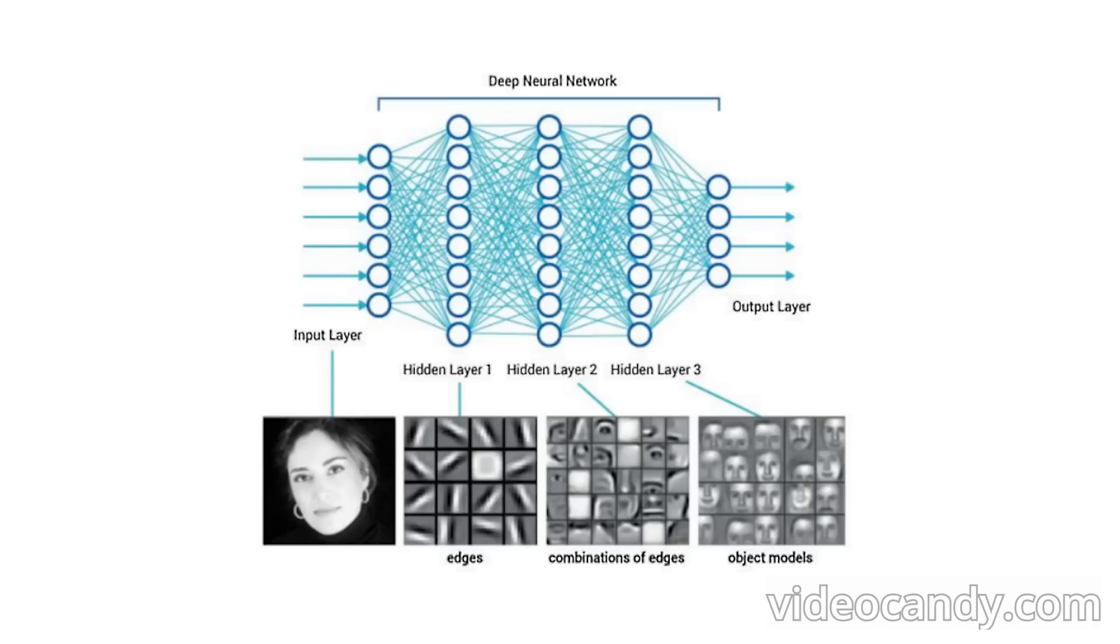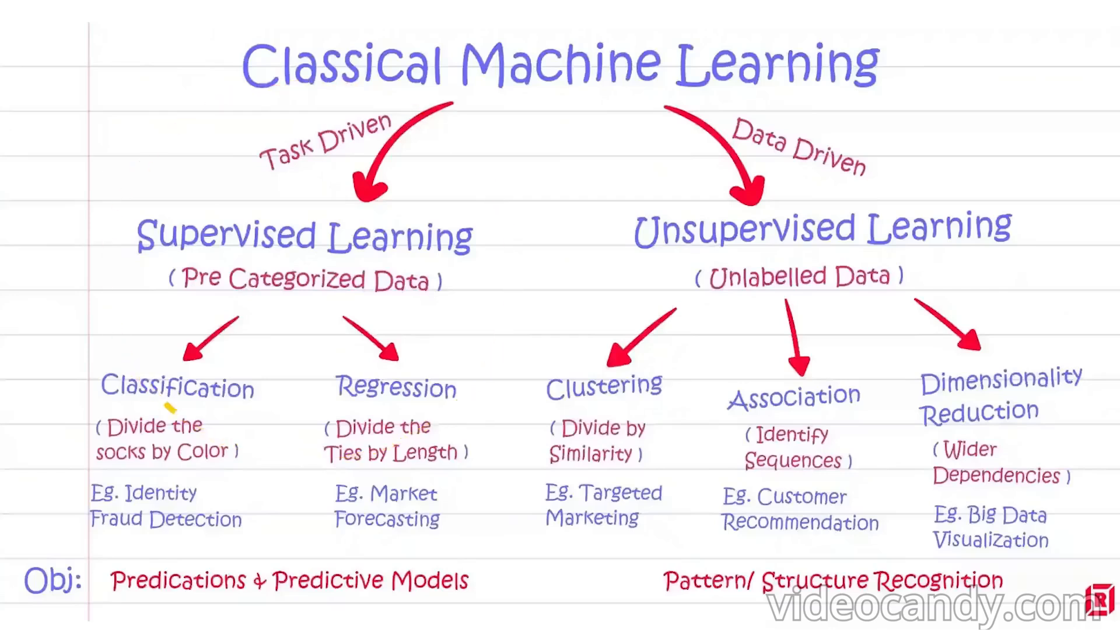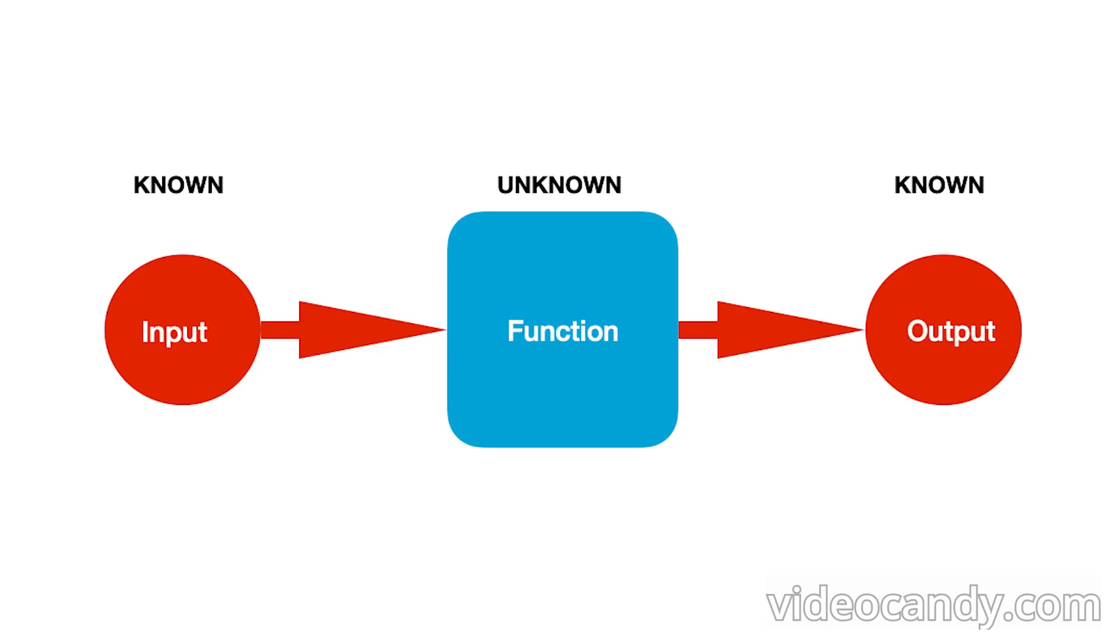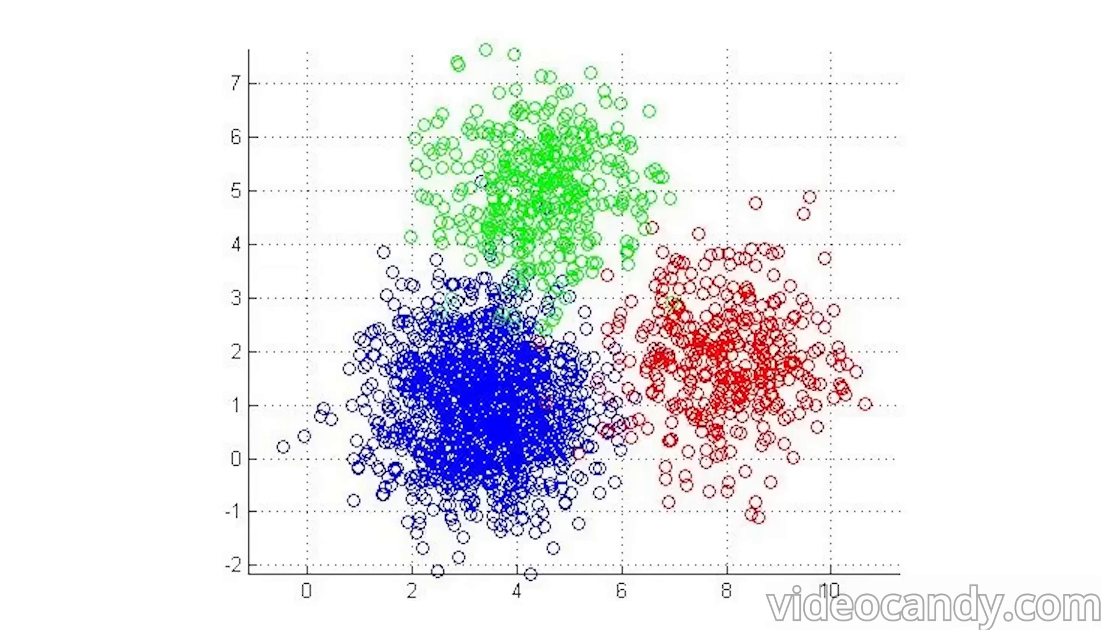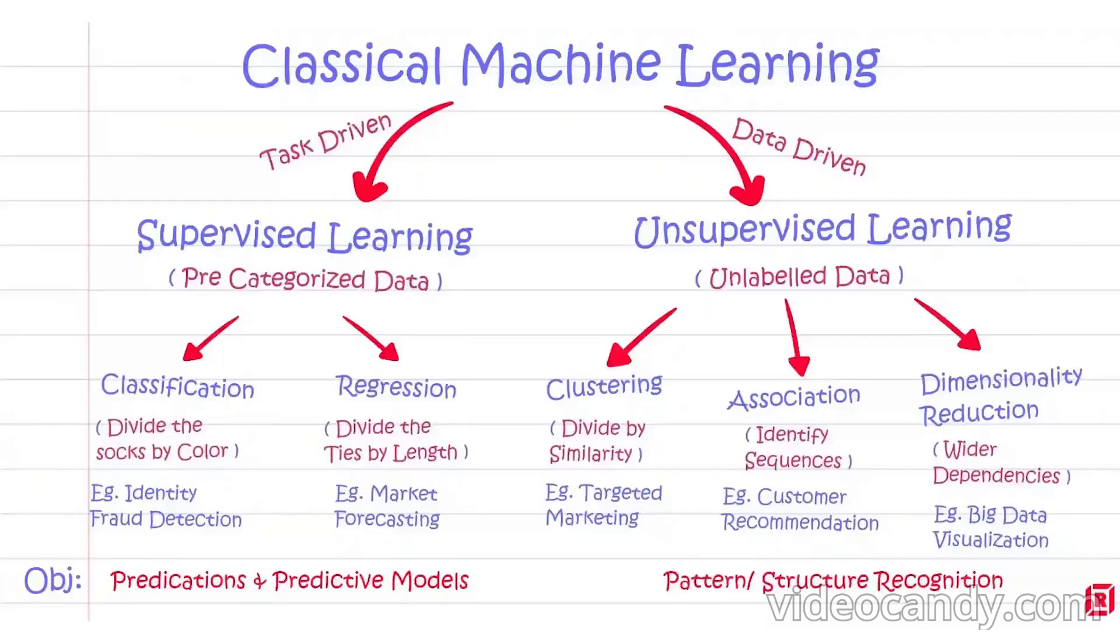All we have talked about so far is supervised learning, where we wanted to predict a specific target variable using some input variables. However, sometimes we don't have anything specific to predict and just want to find some underlying structure in our data. That's where unsupervised learning comes in.